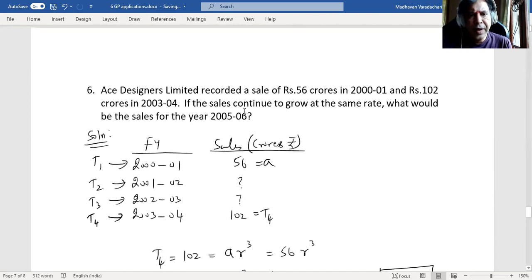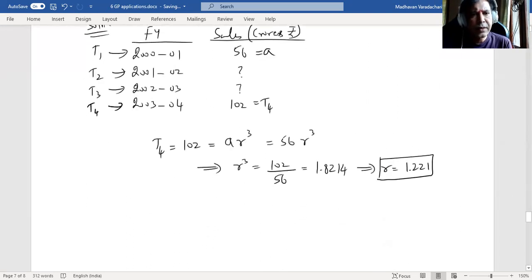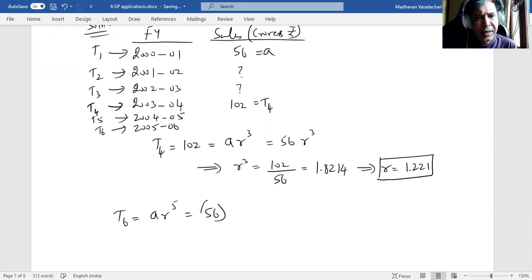Now we are supposed to find what would be the sales for the year 2005-2006. Next will be 2004-2005, then 2005-2006. That means they are asking us to find t6. So now t6 is a times r to the power of 5. a is known to be 56, r is known to be 1.221.